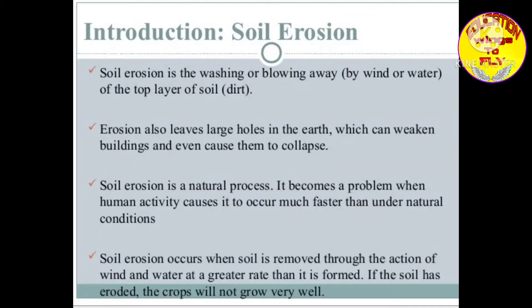In my previous video I talked about the soil profile, and in today's video we are going to talk about soil erosion. Soil erosion is the removal of the topmost layer of the soil by the action of wind and water. It occurs when soil is removed at a greater rate than it is formed. If the soil has eroded, the crops will not grow very well.